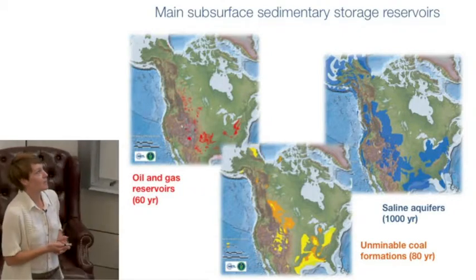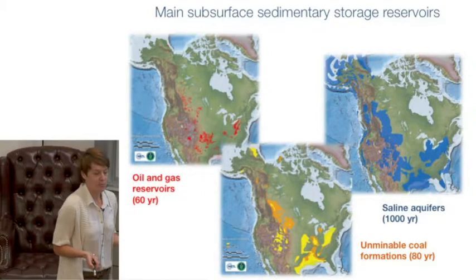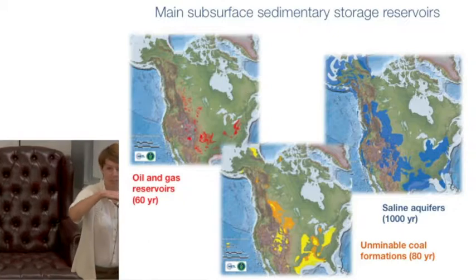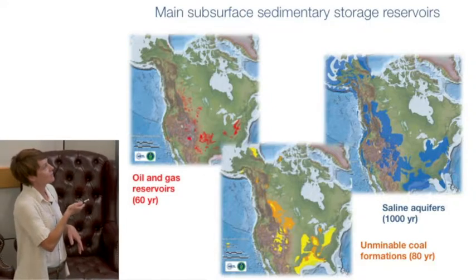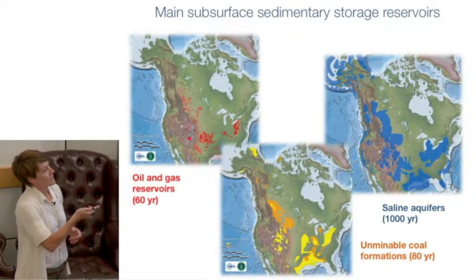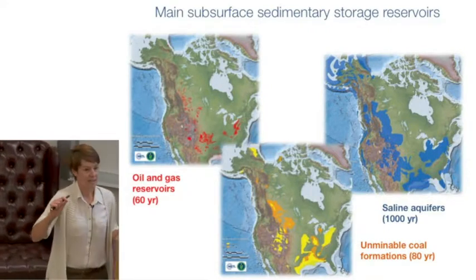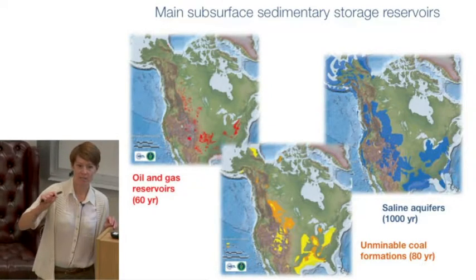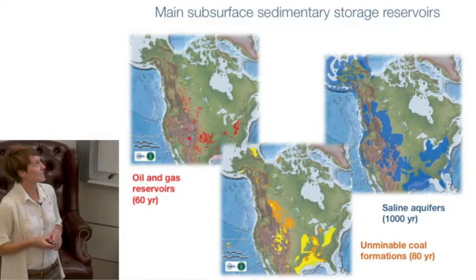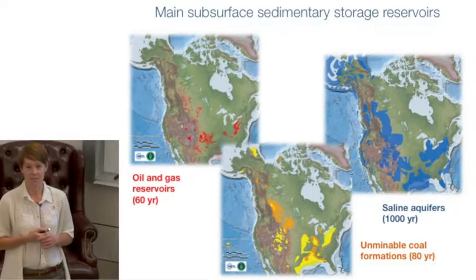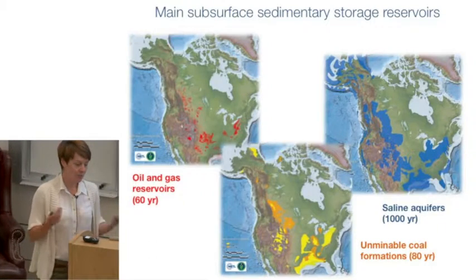In terms of how big this could be: if we look at all of these sedimentary storage reservoirs — oil and gas reservoirs, unminable coal formations, and saline aquifers — we can estimate the number of years we could sequester CO2 from power plants at current emissions rates. That's 60 years worth of US emissions for oil and gas, up to a thousand years for saline aquifers. This would be capturing about two and a half gigatons per year of CO2 and injecting it into the subsurface, giving us quite a large capacity.